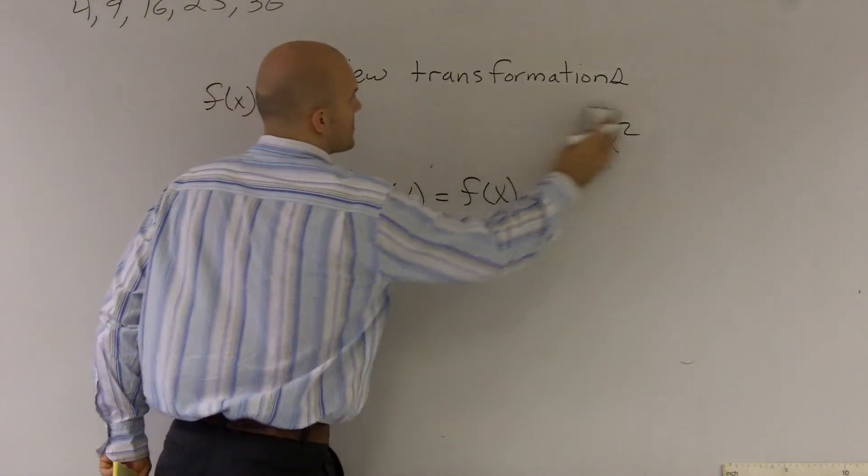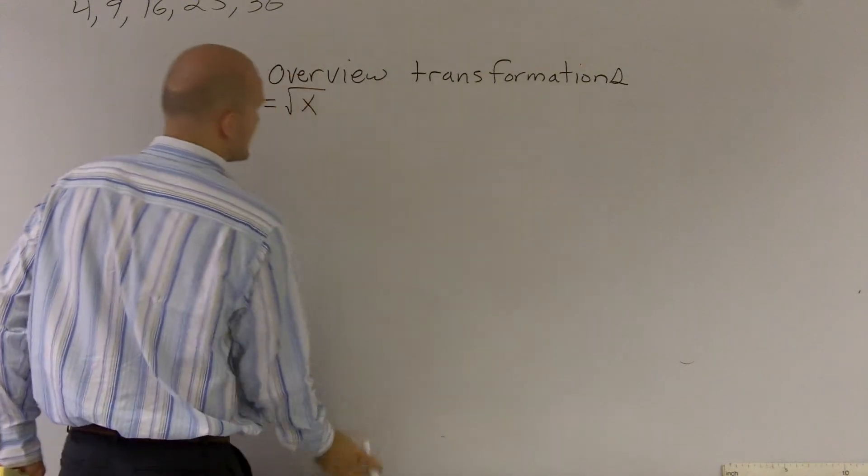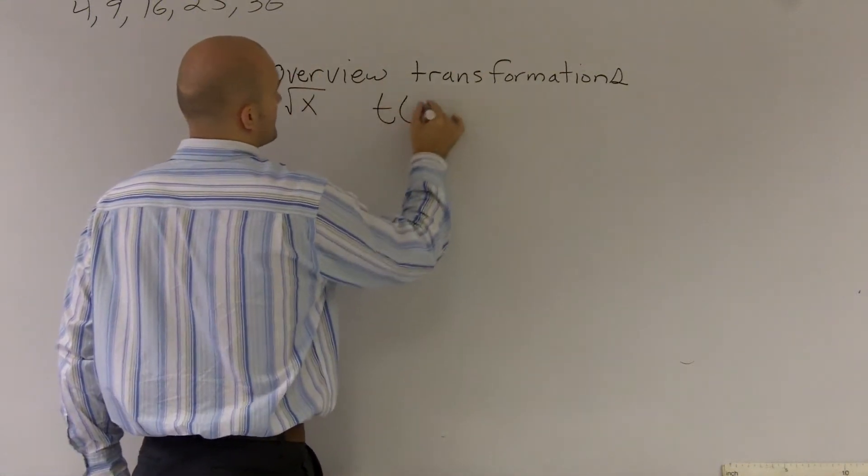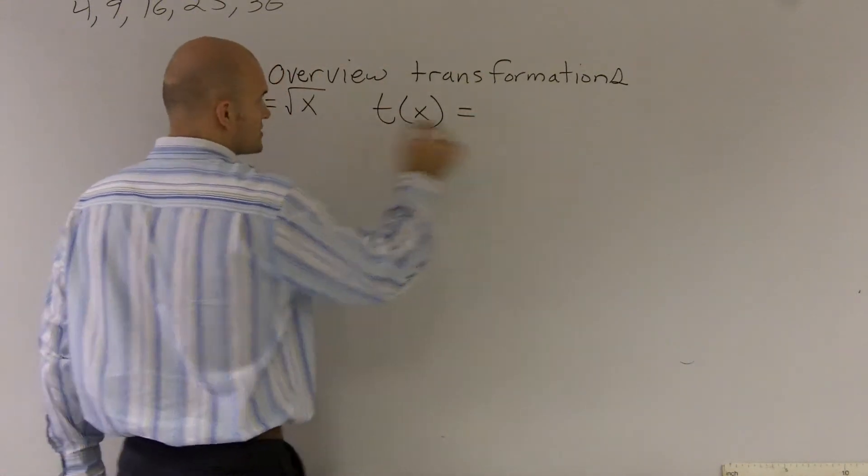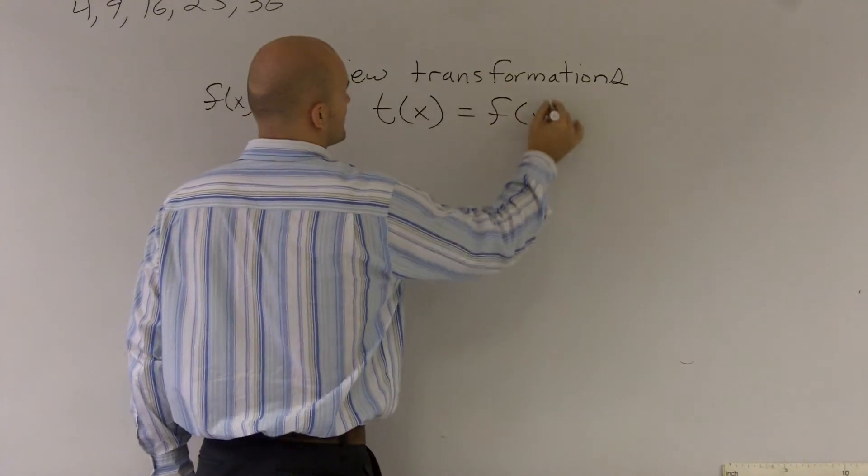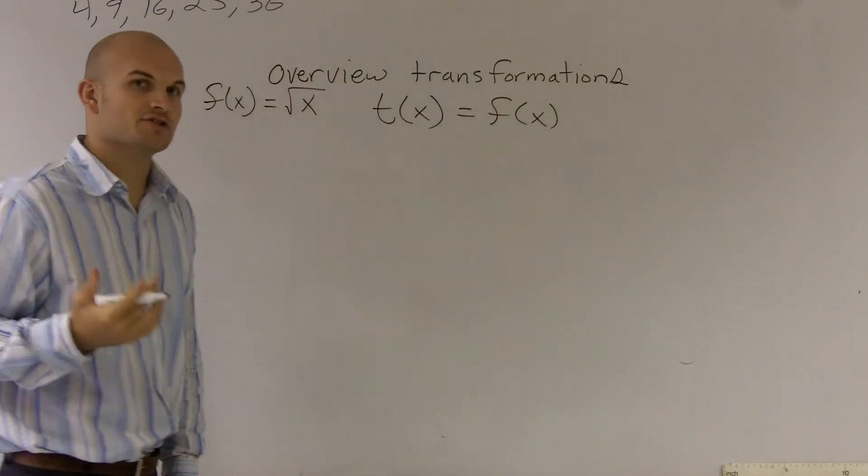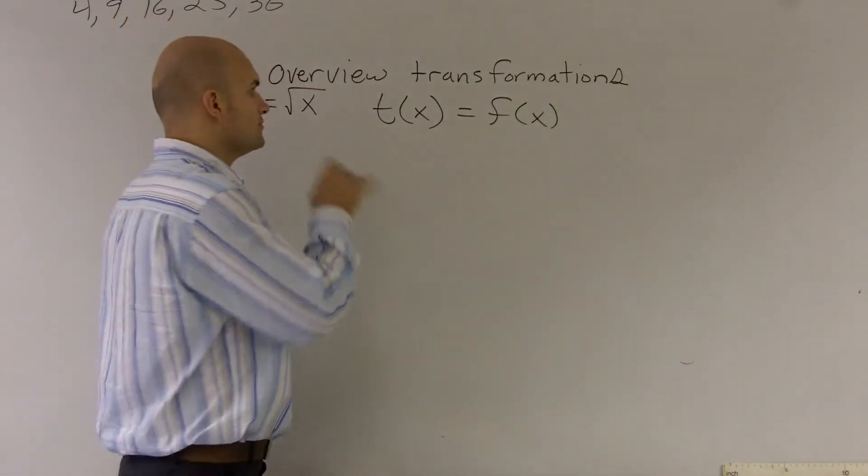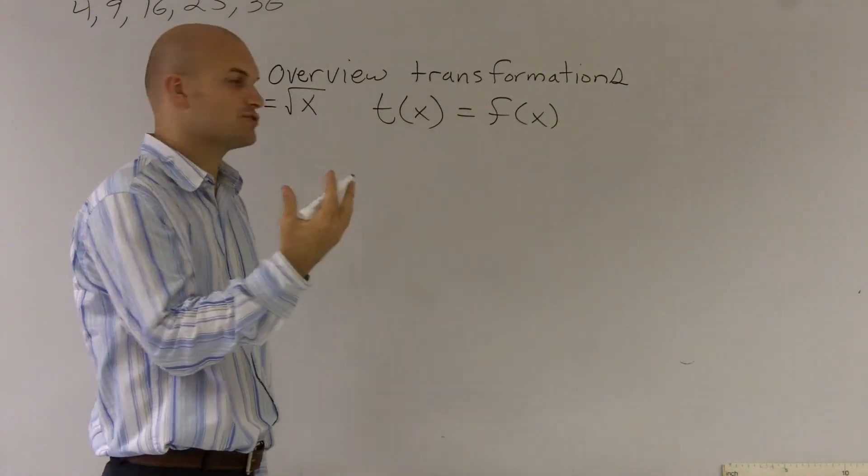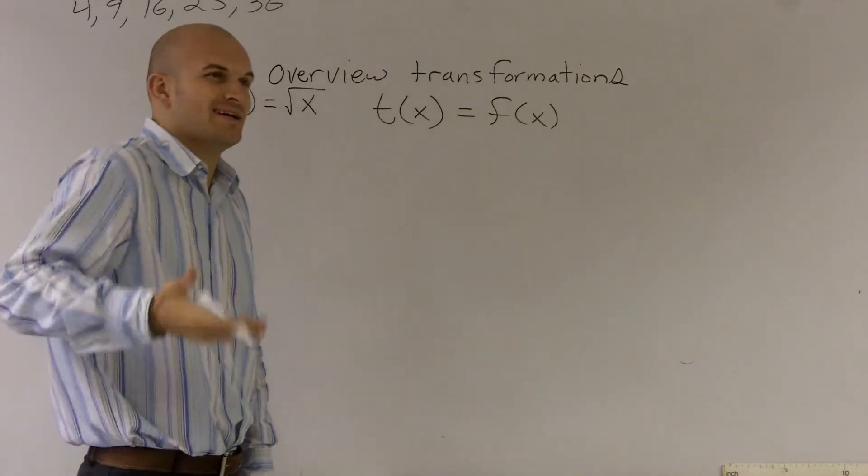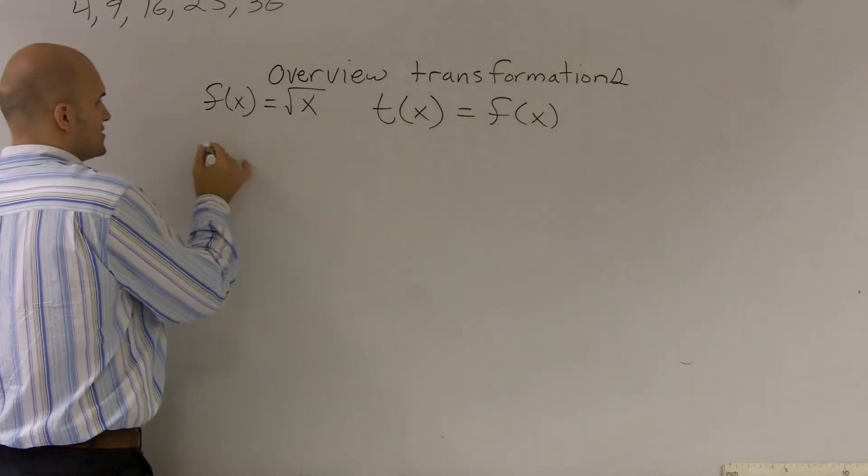Let's erase the rest of these so we're not getting confused. I'll write t(x) equals my f(x), and what I'm going to do is a certain amount of transformations. Those transformations we're going to add with c.